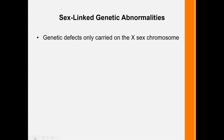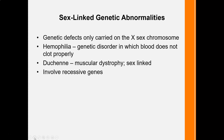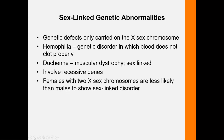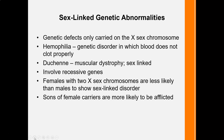Then you have sex-linked genetic abnormalities found on the 23rd chromosome, most commonly carried on the X from the egg. Hemophilia is one — the individual cannot create blood clots and can die. Duchenne muscular dystrophy is another. Females with two X chromosomes are less likely than males to show these sex-linked disorders because the X carries more information and can quiet down the carrier X. Sons, however, are more likely to be afflicted.